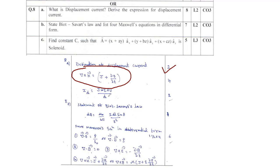Ultimately you will be getting the expression as I_d = jωεAb/d. So you will be getting two marks for that. The total marks breakdown is: two plus four plus two, giving a total of eight marks.